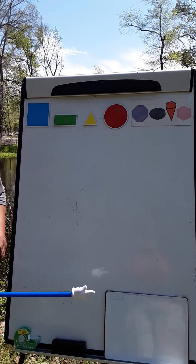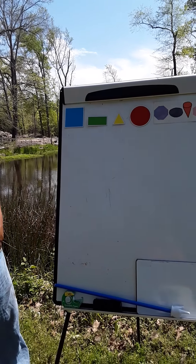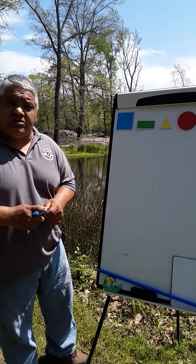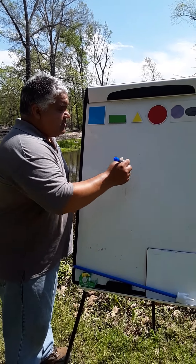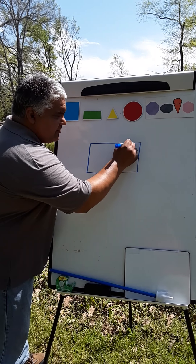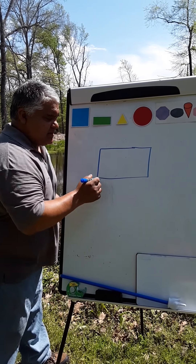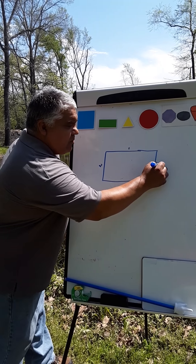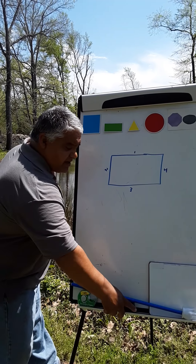Now we are going to talk about shapes and their characteristics. What shape has four sides and two sides are longer? Can you tell your mom? That's correct — a rectangle. A rectangle has four vertices and four sides: one, two, three, and four. And it has four vertices or corners. That is a rectangle.